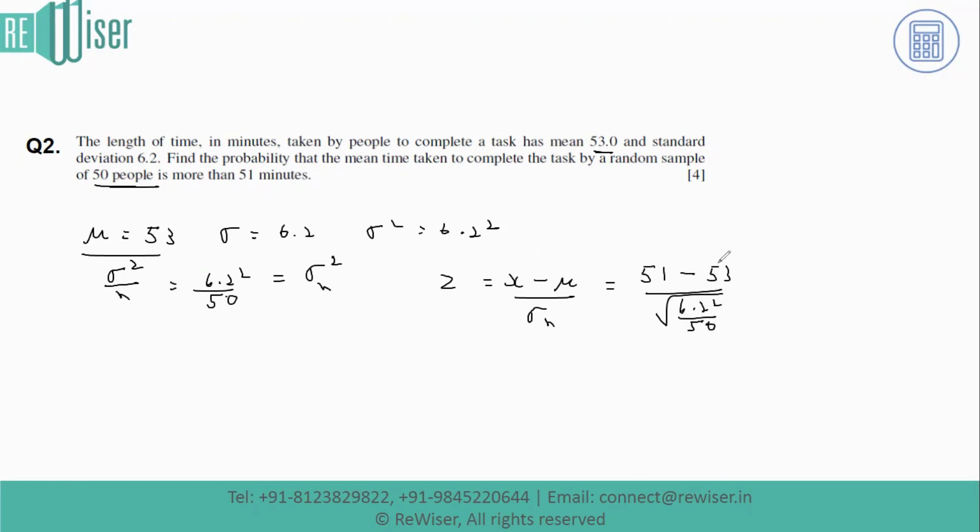The z-score is minus 2.281. We'll calculate the probability greater than a z-score of minus 2.281, which is the same as the probability value of positive z-score 2.281.